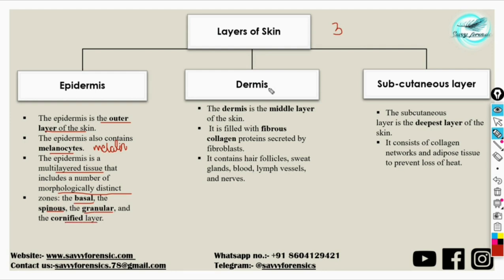The dermis is the middle layer of the skin. It usually contains fibrous collagen proteins which are secreted by fibroblast cells. It also contains hair follicles — the hair follicles are embedded in the dermis of the skin. Sweat glands, blood and lymph vessels and nerves are also present. These are the important structures in the dermis layer.